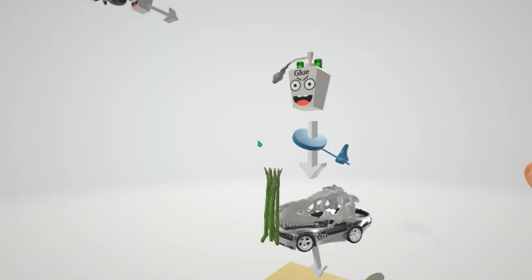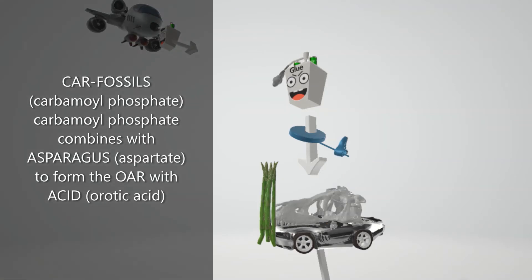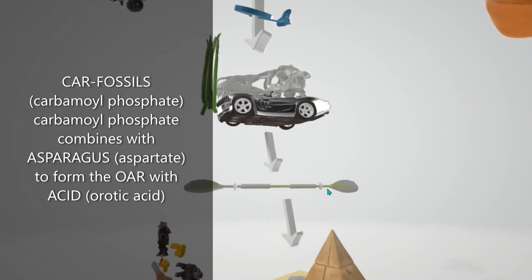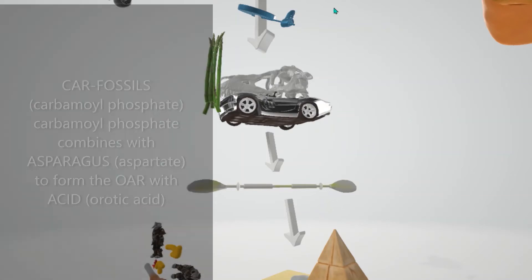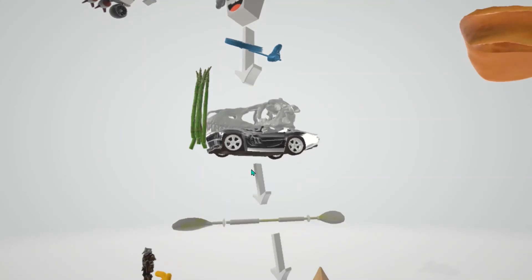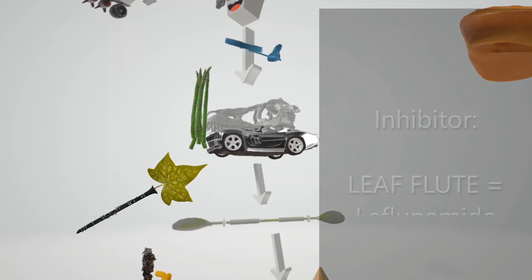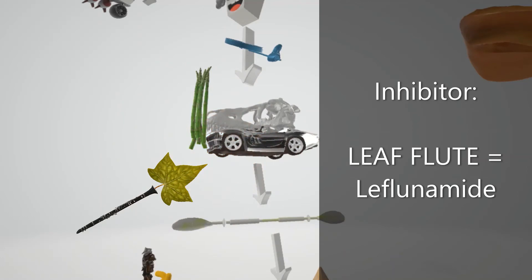Carbamoyl phosphate combines with asparagus — aspartate — and together they produce an ore with acid dripping from it: orotic acid. So glutamine is converted to carbamoyl phosphate, which combines with aspartate to produce orotic acid. A leaf and a flute coming in and exploding here help us remember that leflunomide inhibits this step.